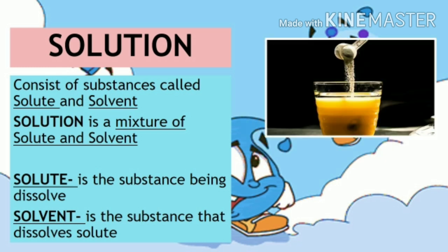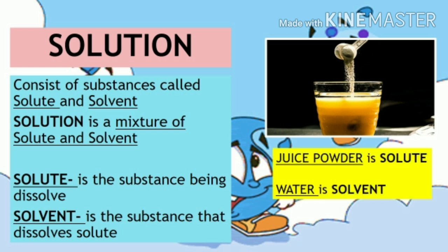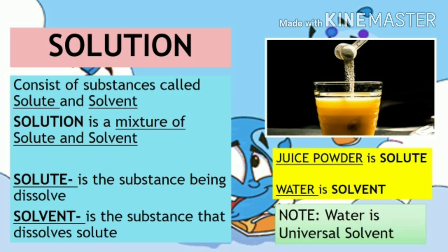Let us take for example the mixture of juice powder and water. The juice powder is the solute, while the water is the solvent. Take note: water is a universal solvent. Whatever is mixed with water, it will always be the solvent, while the other substance is the solute.